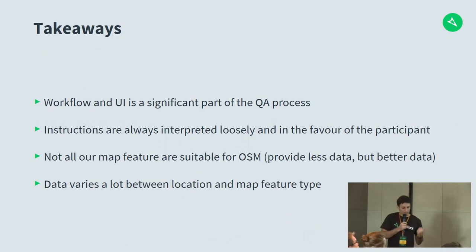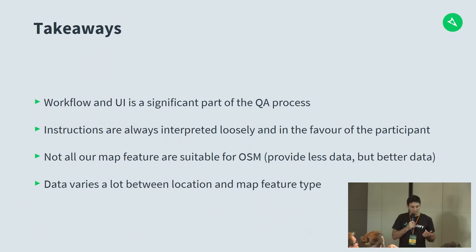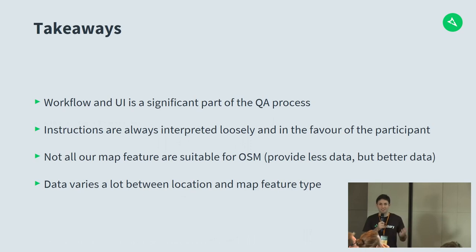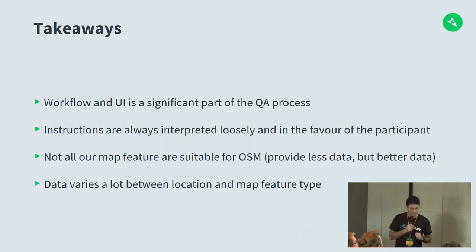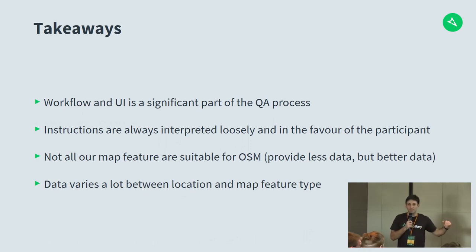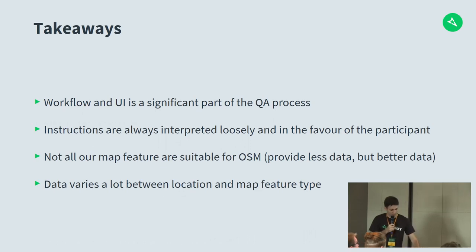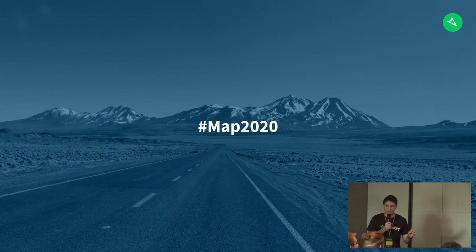Takeaways from the first project: workflow and UI is a really significant part of quality assurance for map editing. Instructions will always be interpreted loosely and in the favor of the participant — we've found this time and time again, so you need to be really careful about the instructions you provide. Not all map features are suitable; benches in Austin might not be as useful at the moment as benches in Kyiv. Data also varies a lot between locations.